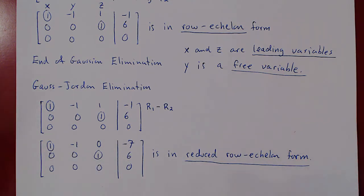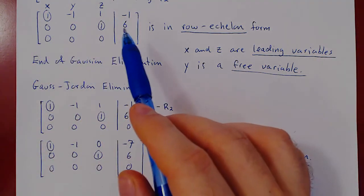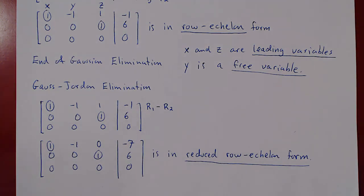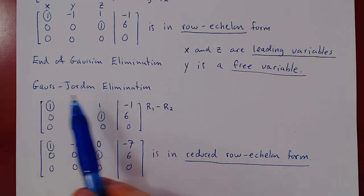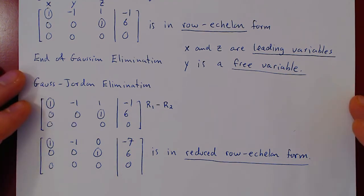Why do we do this rather than simply use backward substitution? If you use backward substitution at the row echelon form stage with a free variable, you'll realize you need to do extra algebra and the solution won't be fully simplified. Whereas once you reach reduced row echelon form via Gauss-Jordan elimination, you can write the solution set immediately with no further algebra required.